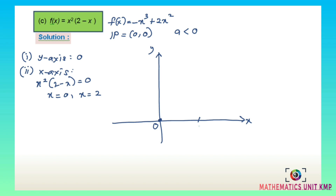Since the value of a is less than 0, at the right the graph is concave down and at the left it is concave up. Label the graph f(x) equals x²(2 minus x).